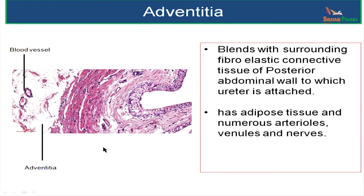We will now study the last layer, or the outermost layer, in the wall of the ureter. It is nothing but adventitia. This adventitia is going to blend with the surrounding fibroelastic connective tissue of the posterior abdominal wall to which the ureter is attached.